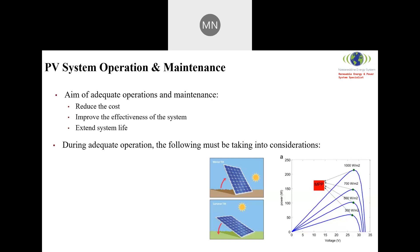When you prepare the operation and maintenance plan, you should take into consideration, as a minimum, the following: the installed system type and its desired scope. For example, are you installing a hybrid system, an off-grid, an on-grid, a system integrated with a generator, or a system integrating different PV types such as off-grid with on-grid? All this information needs to be considered. The second important item is PV capacity.